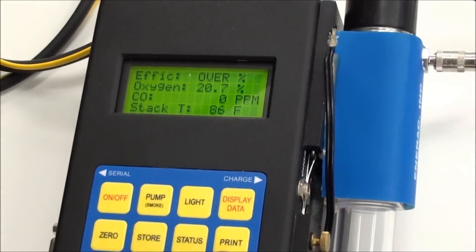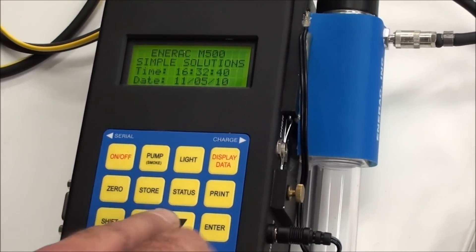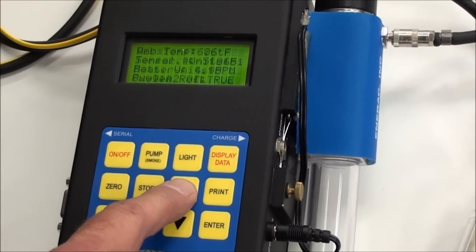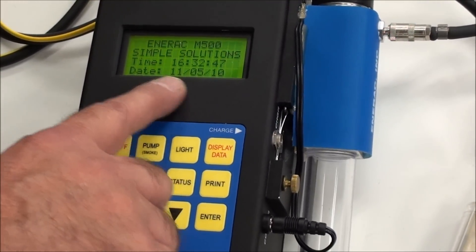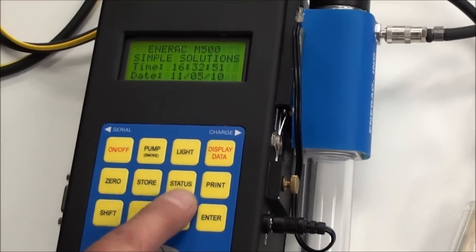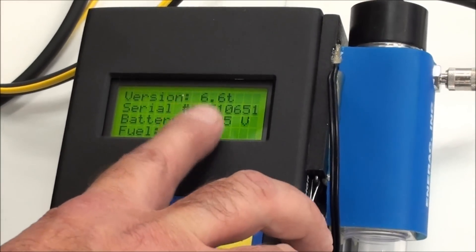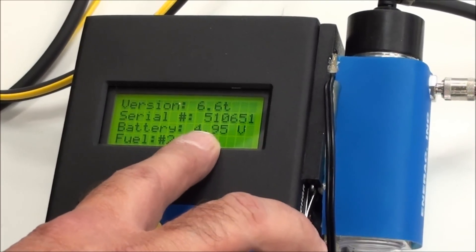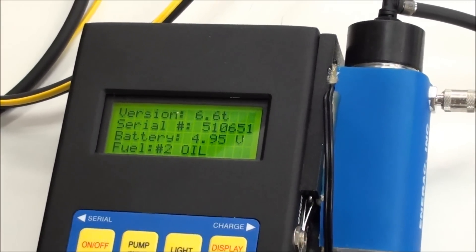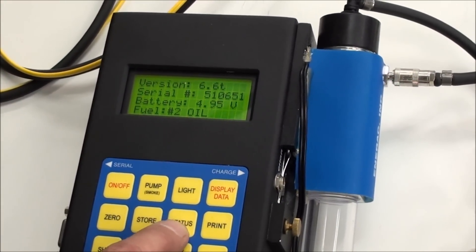That button plus the status button have multiple uses. What you'll do is you can hit the status and toggle it several times. You get several different displays. First screen will give you your time and date. This is the customer's name. Next screen gives you your software version, the serial number of the unit. This is your battery voltage, and tells you which fuel you've got set up in the machine. You have up to 15 fuels available to select from.